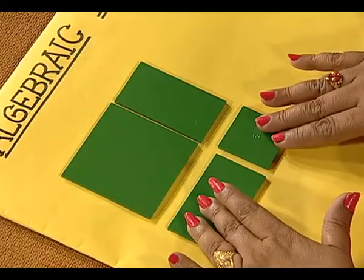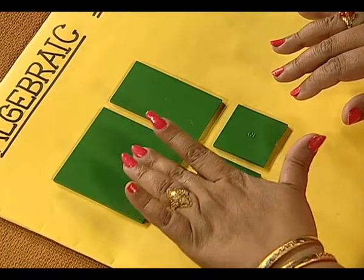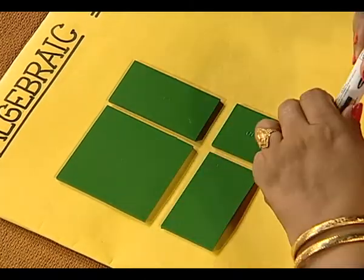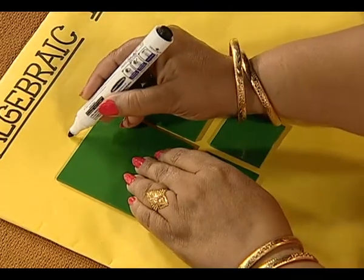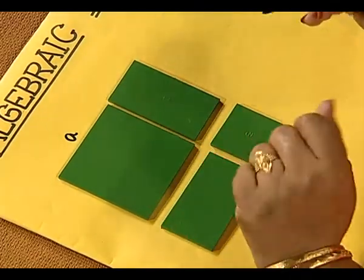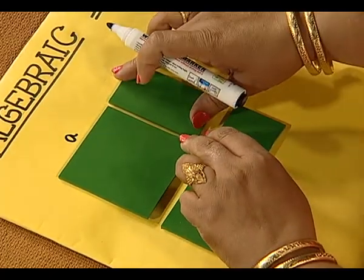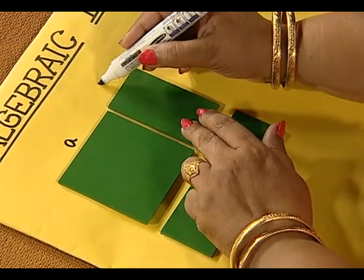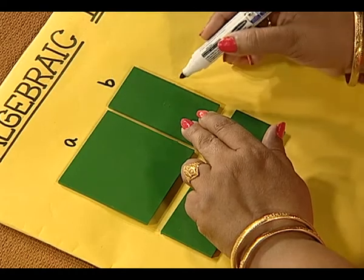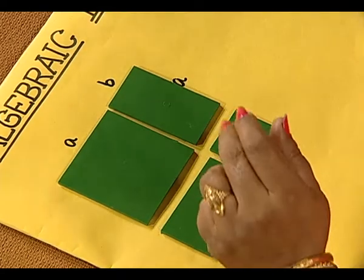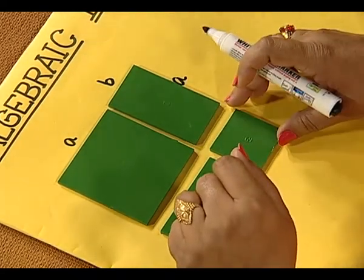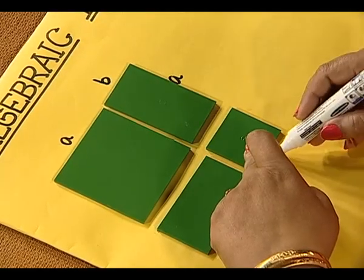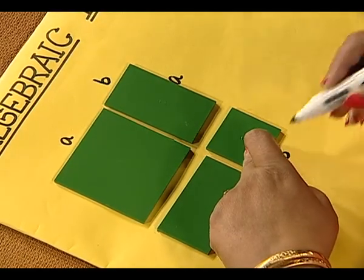Look here, we have a set of 4 cutouts. Let this square cutout be of length a units and let this be a rectangular cutout with width b units and length a units. Same way, let this cutout be of breadth b units.